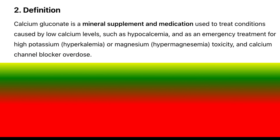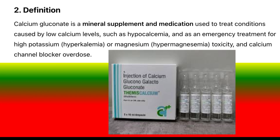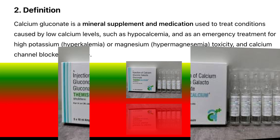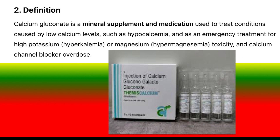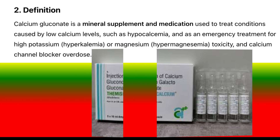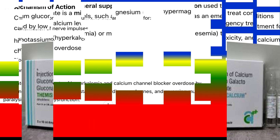Definition: Calcium gluconate is a mineral supplement and medication used to treat conditions caused by low calcium levels such as hypocalcemia, and as an emergency treatment for high potassium (hyperkalemia), magnesium toxicity (hypermagnesemia), and calcium channel blocker overdose.